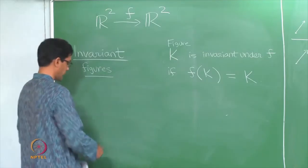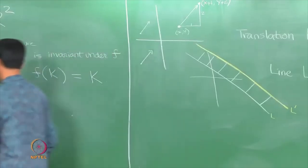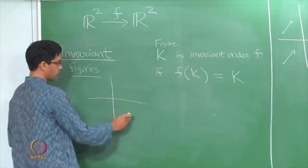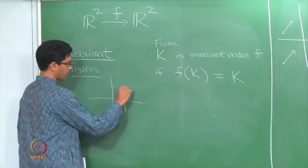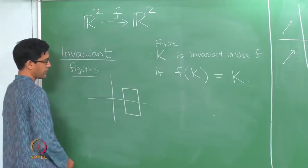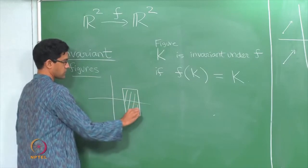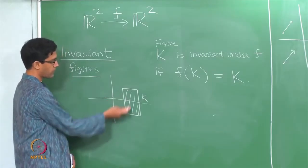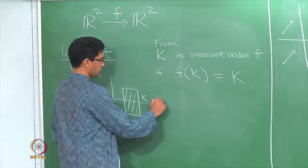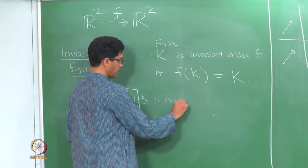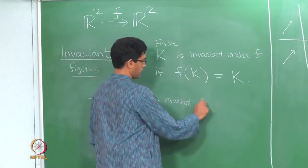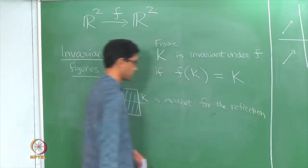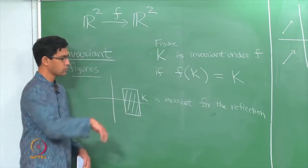Let us do some examples for the case of reflection about the x-axis. If you take the reflection about the x-axis, any figure that is symmetrical about the x-axis is invariant. For instance, if I take a rectangular figure that is symmetric about the x-axis and call that region K, then when I reflect it about the x-axis I get back the same region, because the top half maps to the bottom half and the bottom half maps back to the top half. So this K is invariant under the reflection about the x-axis.